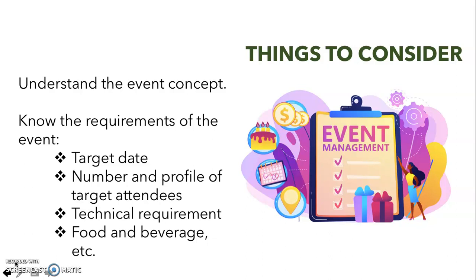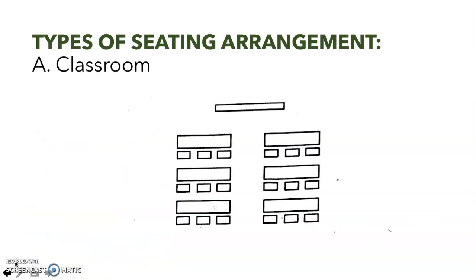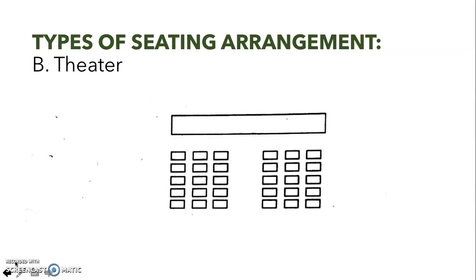Number two: decide on the floor plan and seating arrangement if the program requires guests to be seated. Here are some types of seating arrangements — you may opt to pause the video to have a closer look. The first type is the classroom arrangement: there's a stage in front and tables and chairs where you can take notes or do workshops. Another type is called the theater: there's a stage in front and chairs but no tables, placed side by side so everyone faces the same direction.